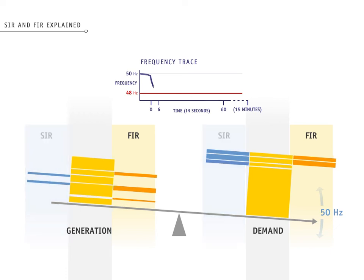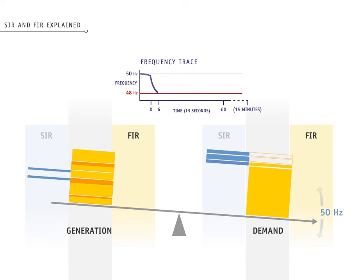The fast instantaneous reserve kicks in within 6 seconds and acts like a brake to prevent frequency going below 48 Hz, but is only required to last for 60 seconds.